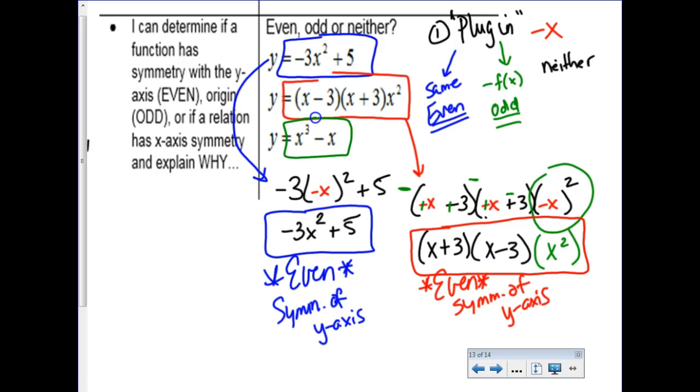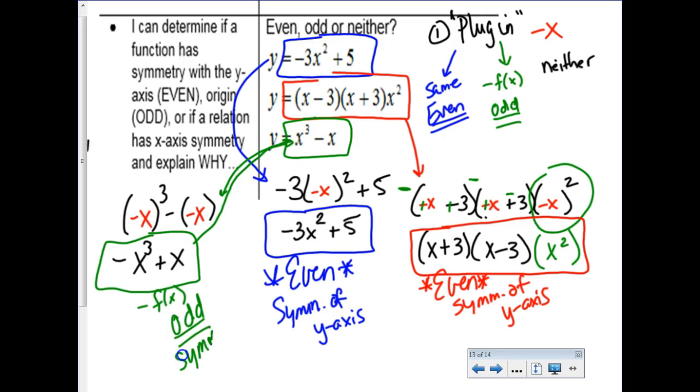Let's look at this last one here, x to the third minus x. When I do that little plug-in negative x thing, I get negative x to the third power minus negative x. So cleaning this up, this becomes negative x to the third power plus x. And if I compare this to the original function, I notice that these are exact opposite terms to these. So, since we have the opposite function, that means you are odd, which means we have symmetry of the origin. That slide looks so ugly. I should redo that, but I'm not.